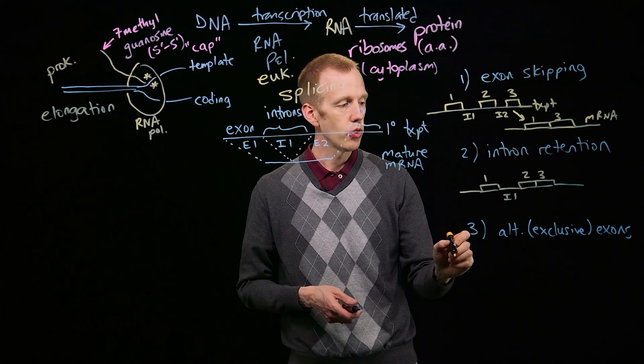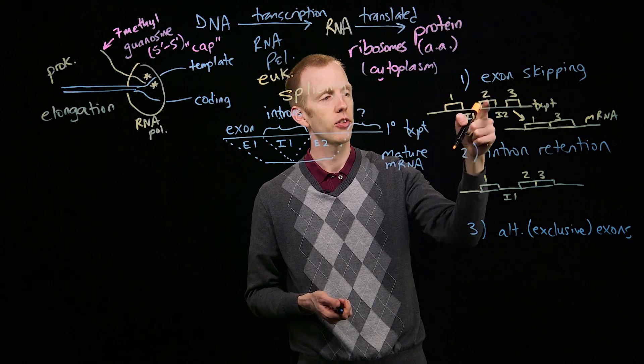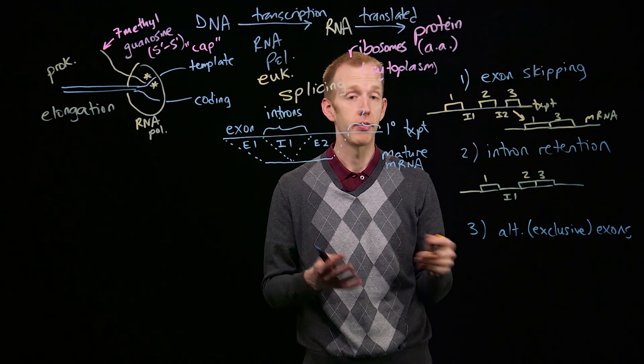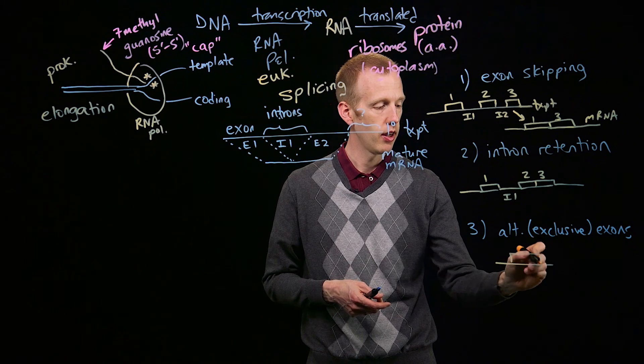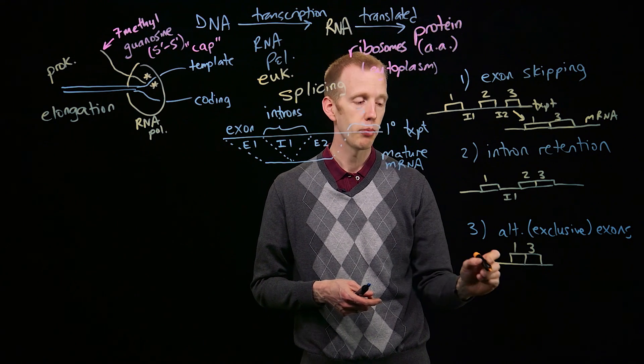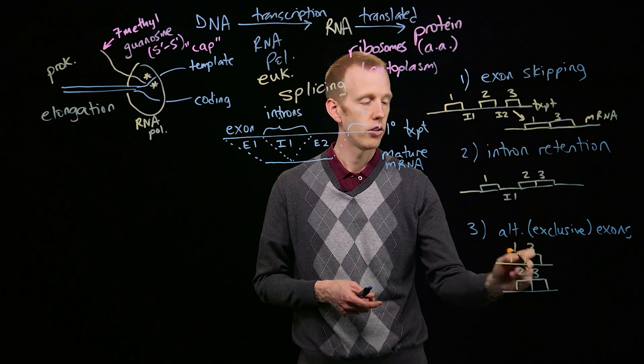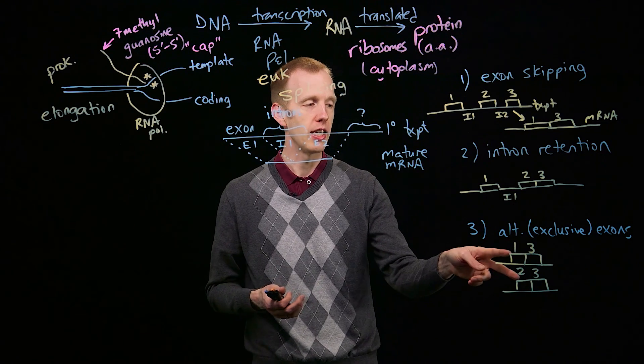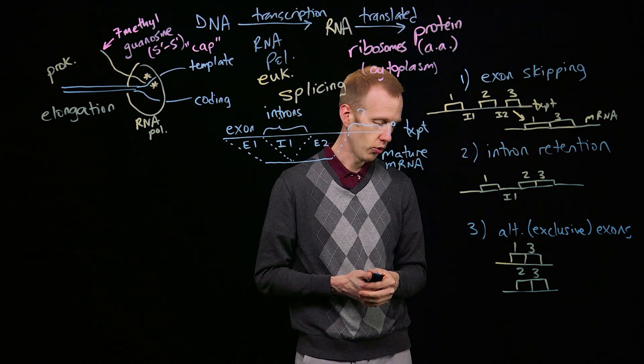Then there's a case of mutually exclusive exons, where you might find that either exon 1 or exon 2 gets used, but never both. That makes them mutually exclusive, so you might find cases where you either find exons 1 and 3 spliced together, or exons 2 and 3 spliced together. So it's like the cell is choosing, you get to pick either exon 1 or exon 2, but never both, to wind up in the mature transcript.